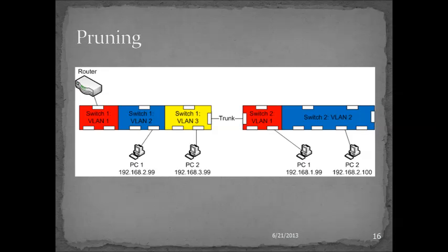A discussion about VLANs and trunks has to include some mention of pruning. There are times when you do not want all of your VLANs to propagate throughout the entire network, or you might not want all VLANs to be able to reach all other VLANs. In that case, you can decide to exclude transmissions to or from a particular VLAN through the process of pruning — you indicate on that particular trunk line that traffic for a particular VLAN is denied. By default on Cisco devices, all VLANs are allowed.